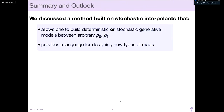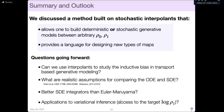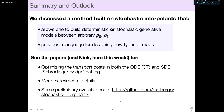As a quick summary: stochastic interpolants allow building deterministic or stochastic generative models between arbitrary densities, and hopefully provide a language for designing new types of maps. Questions going forward: can we use this paradigm to study the inductive bias in transport-based generative models? Are the assumptions on the ODE and SDE frameworks realistic? Are there better ways to sample? Can we use this for variational inference? For more information, see Nick who's here for the week. Papers are available on optimal transport and the Schrödinger bridge problem, and preliminary code is available.